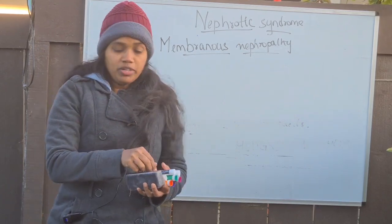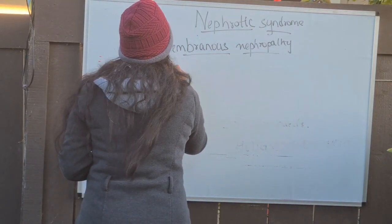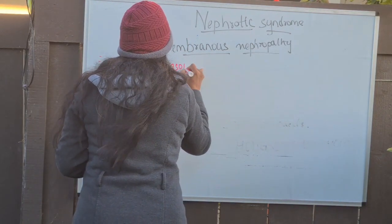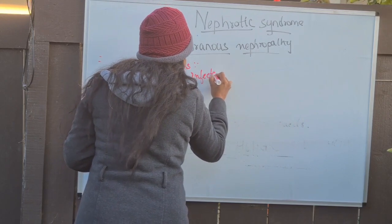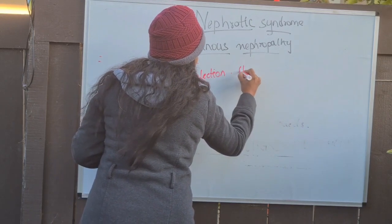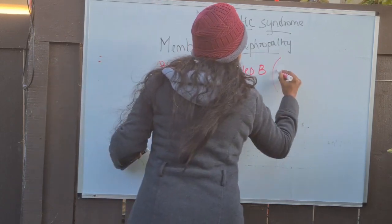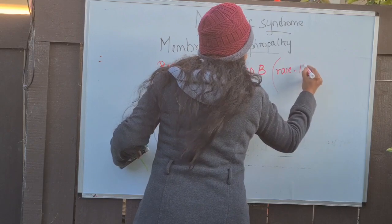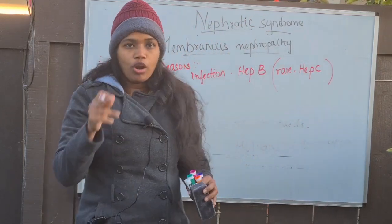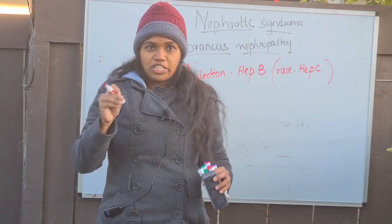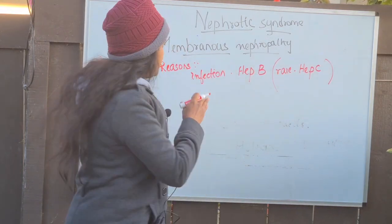So there are numerous reasons for this membranous nephropathy which you need to know. The first one is infection. Membranous nephropathy is most commonly because of hepatitis B. Very rarely it is due to hepatitis C. We had already discussed about membranoproliferative MPGN — there hepatitis C is much more common, whereas here hepatitis B is common.